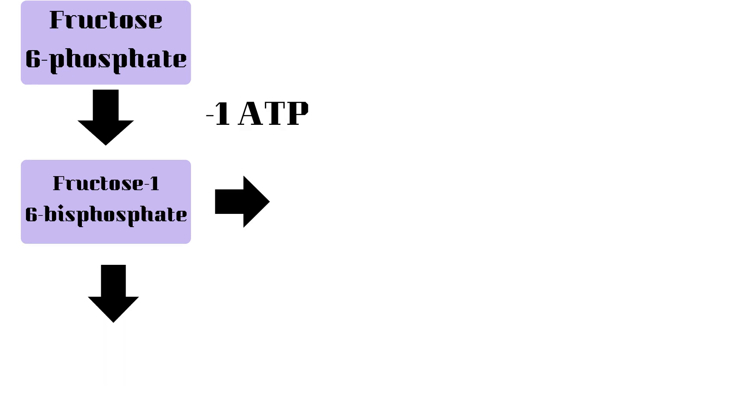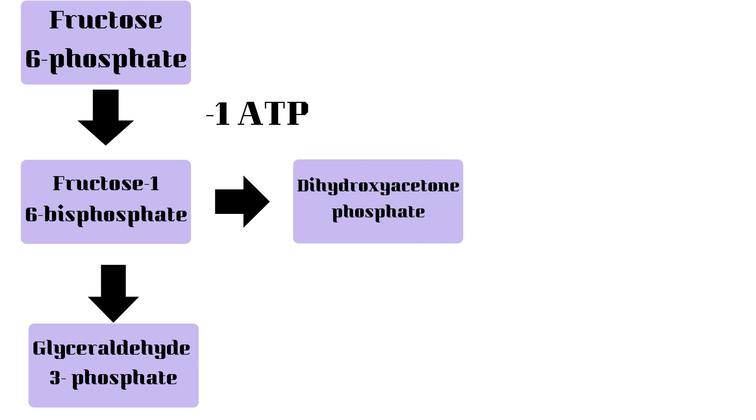Then, this is going to split up and we will get two molecules: glyceraldehyde-3-phosphate molecule and dihydroxyacetone phosphate. These two molecules are actually isomers and can therefore be converted into each other using the enzyme isomerase.